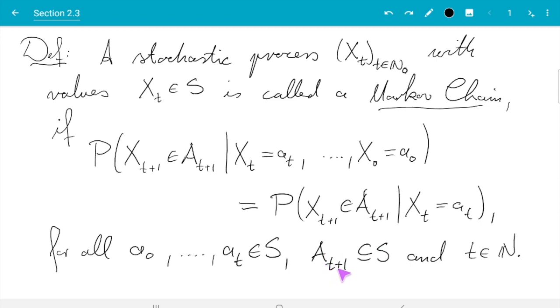The quantifiers down here just say that needs to hold whatever has happened in the past, and that needs to be true for every question we could ask about Xt+1, so every set we can plug in here, and it needs to hold for all time. That is the definition of a Markov chain with state space S.